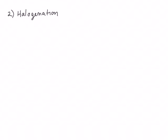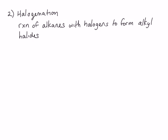The second reaction we'll discuss is called halogenation. Halogenation is the reaction of alkanes with halogens to form alkyl halides. An example reaction is the halogenation of methane using bromine and an input of energy in the form of heat or light. We're not going to worry about balancing this equation because it produces so many different products.